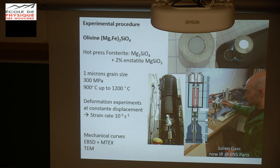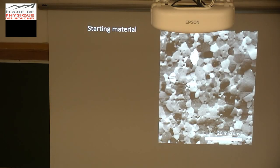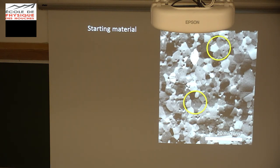We'll show you the mechanical curves, the EBSD maps obtained by SEM, and the new stuff this year is TEM. The starting material was produced by hot pressing nano-forsterite in Japan, and compared to what we usually produce in olivine, here you see very nice grain boundaries — straight and nice triple junctions. Normally our hot press starting material is not as nice as this one, so we were pretty excited to squeeze it. There is almost no porosity, very very low. A great starting material.